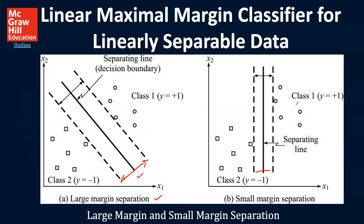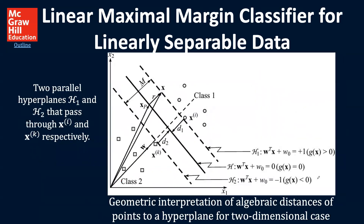What we'll be getting to later is we can actually have examples of some of these data that, at least for some of them, still don't honor this separation that we're trying to come up with. So we'll come back to that in a minute. Here is a geometric interpretation of the algebraic distance of points to a hyperplane for the two-dimensional case.